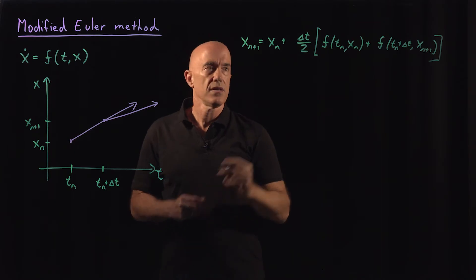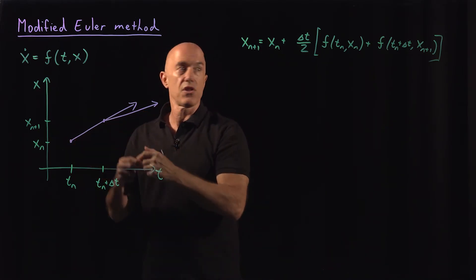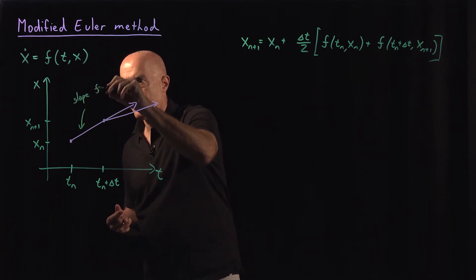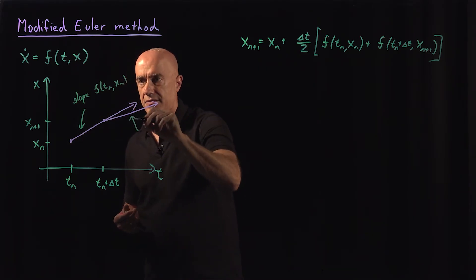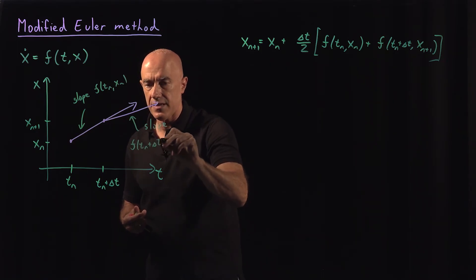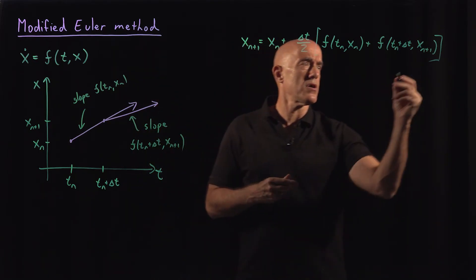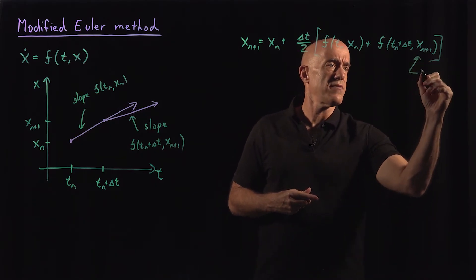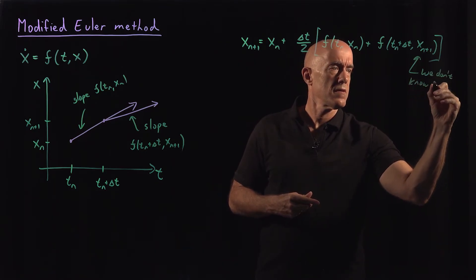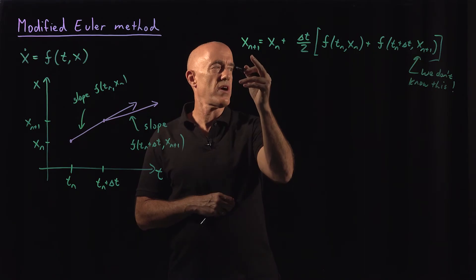That would be the naive way of averaging these two slopes. This slope here is f of t_n, x_n, and this slope is f of t_n plus delta-t, x_{n+1}. The problem, though, is that x_{n+1} is what we're trying to solve — so we don't know it. It's not a useful formula as it stands.